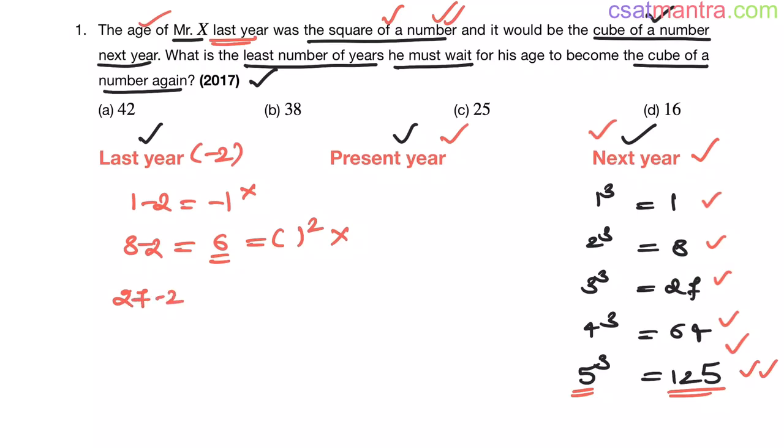27 minus 2, this is 25. 25 is the square of a number - 5 squared. So 25, the last year's age, is the square of a number.